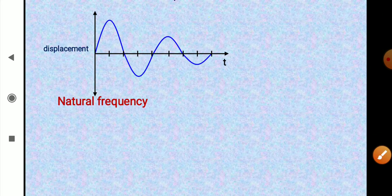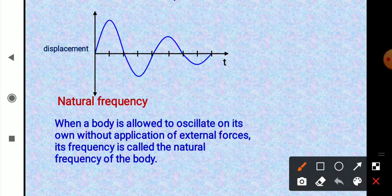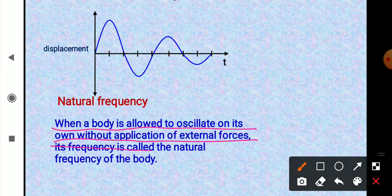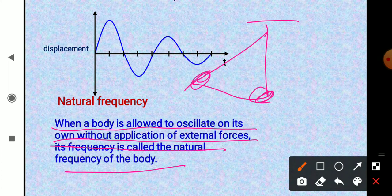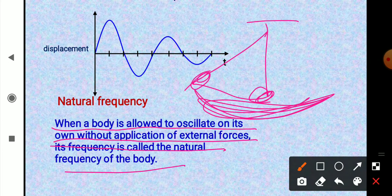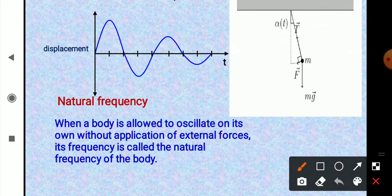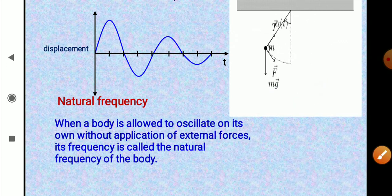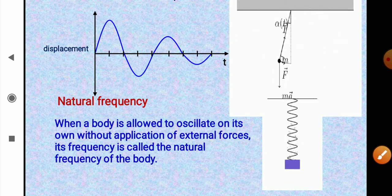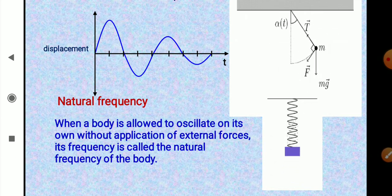Natural frequency: when a body is allowed to oscillate on its own without any external force, the frequency of its oscillation is called its natural frequency. For example, if you take a simple pendulum to one side and release it, the frequency with which it oscillates is its natural frequency. A spring oscillating freely also vibrates at its natural frequency.